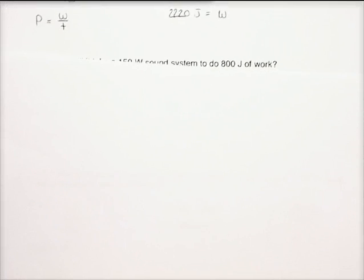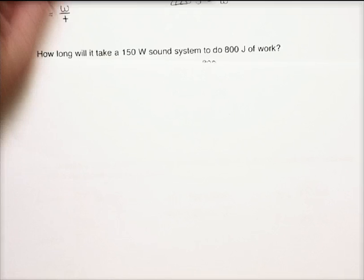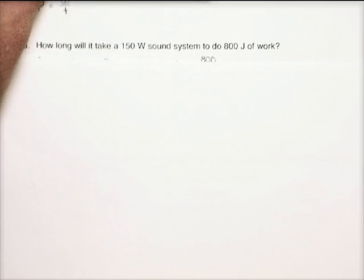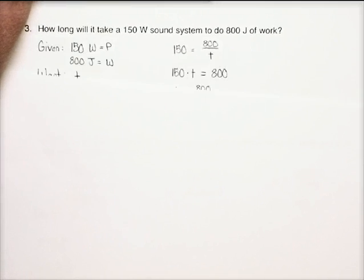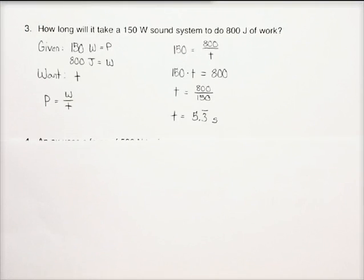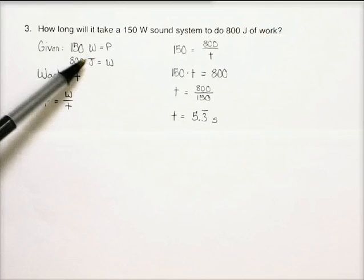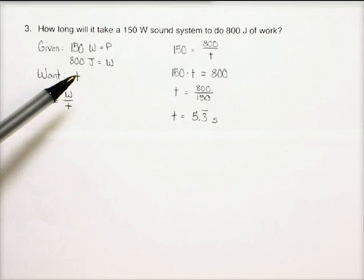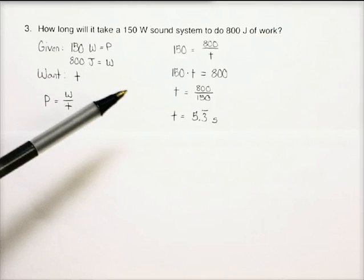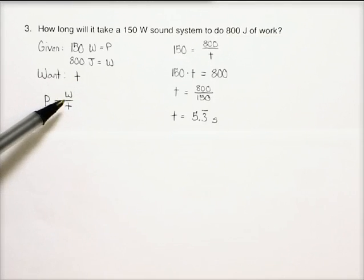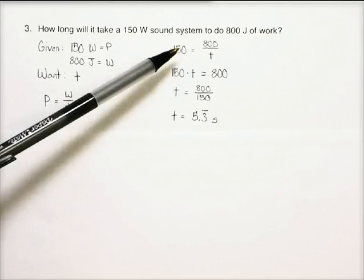All right. Let's look at a third example. How long will it take a 150 watt sound system to do 800 joules of work? And if we look at this one, our givens, we know the power and we know how much work was done. This time we want the time. So now we're looking for a different quantity. We're still going to use the same equation. Power equals work over time.